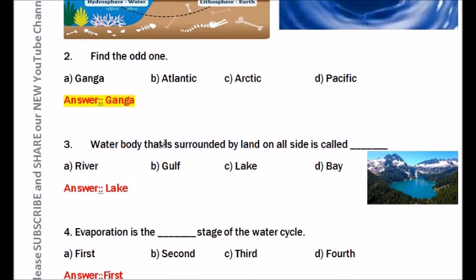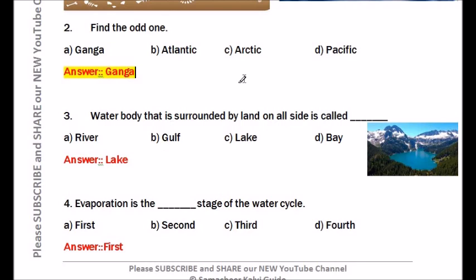Question number three: A water body that is surrounded by land on all sides is called dash. The answer is a lake.